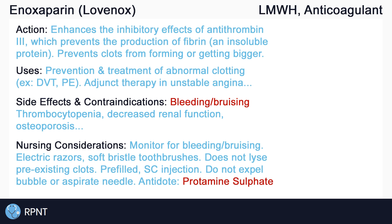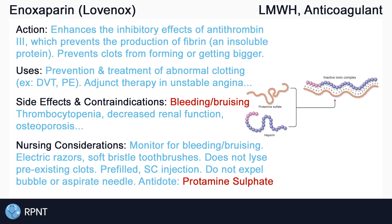Enoxaparin is most often given by subcutaneous injection and often comes in a pre-filled syringe. It is important not to expel the bubble from the syringe before administration, and not to aspirate the needle during injection. The antidote for enoxaparin is the same as heparin — protamine sulfate — which works by binding to enoxaparin so that it no longer has anticoagulant effects.